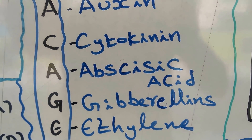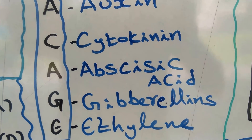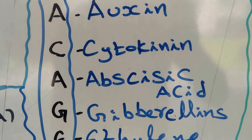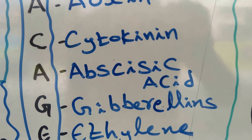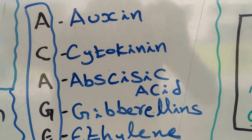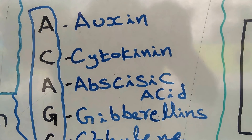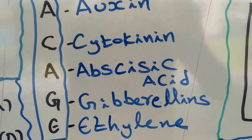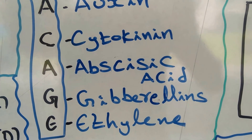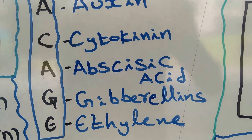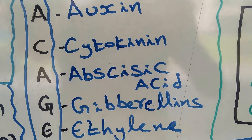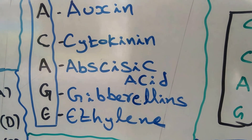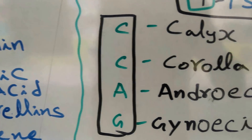Now for phytohormones — plant growth substances and plant regulators — there are five phytohormones. The code is ACAGE: A for auxins, C for cytokinins, A for abscisic acid, G for gibberellins, and E for ethylene. So ACAGE is the code for the five plant growth regulators.